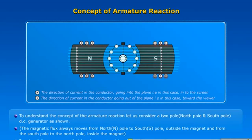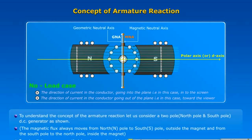For simplicity, we assume that brushes are touching the armature conductors directly. Here, the cross sign indicates the direction of current in the conductor going into the plane, that is, in this case, into the screen. The dot sign indicates the direction of current in the conductor going out of the plane, that is, in this case, towards the viewer.